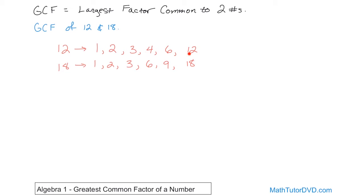We've listed the factors of the number 12 and the factors of the number 18. Now we have to find the largest or greatest factor that is common to both of these. It's going to be the number 6. The number 6 is common to both of them and it's the greatest one. The number 1 is common to both, 2 is a common factor, 3 is a common factor. But the number 6 is the greatest common factor. So the GCF is 6.